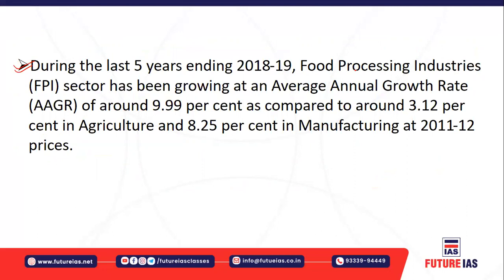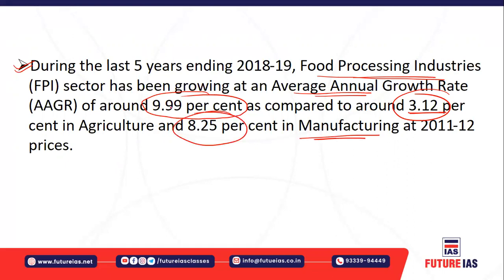Food processing industries have a very good growth rate. In the last five years, the average annual growth rate of food processing industries stood at around 9.99%, which is much higher compared to agriculture at 3.12% and manufacturing at 8.25% — comparing at 2011-12 constant prices ending in 2018-19.